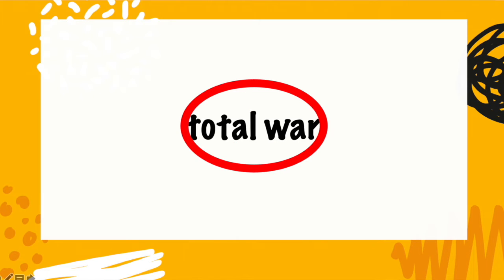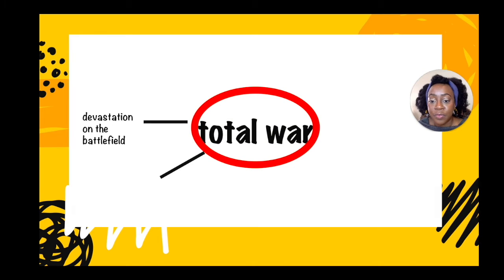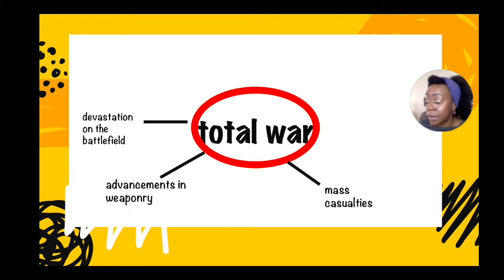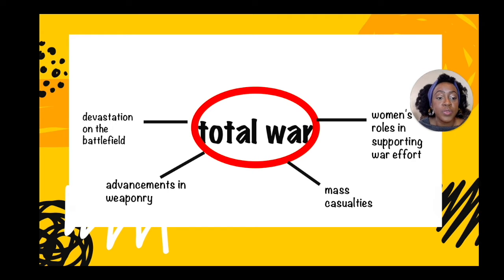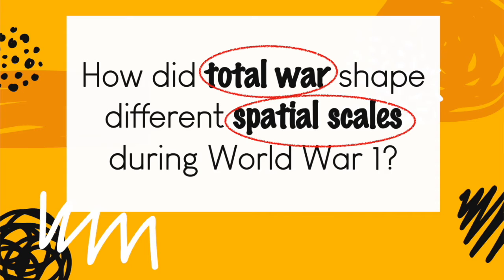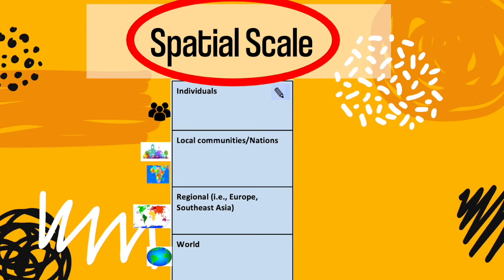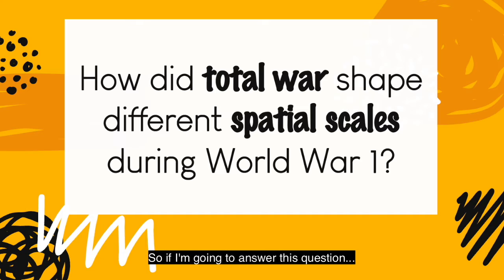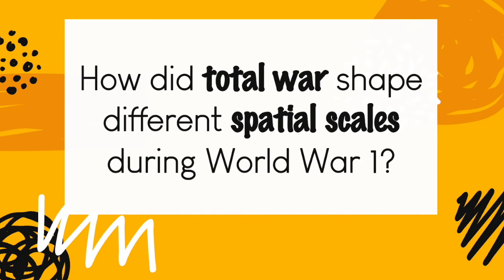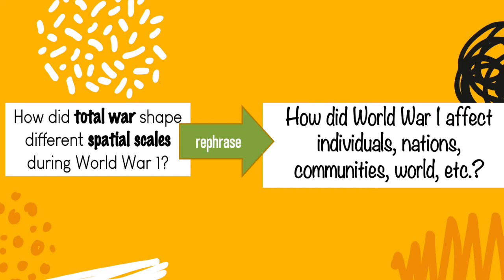When you hear total war, you think of devastation on the battlefield, advancements in weaponry, mass casualties, women's roles in supporting the war effort, and war on multiple fronts. When I hear the word scale, I think of individuals, local communities, nations, regional — for example, Europe, Southeast Asia — and the world. So in other words, we have to write about how World War I affected individuals, local communities, nations, regions, and the world.